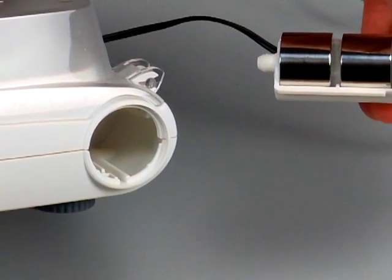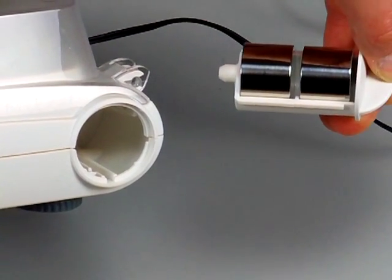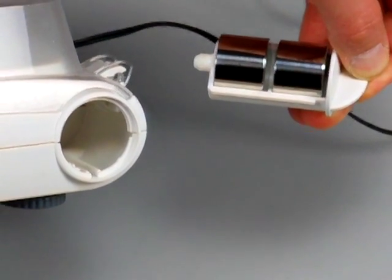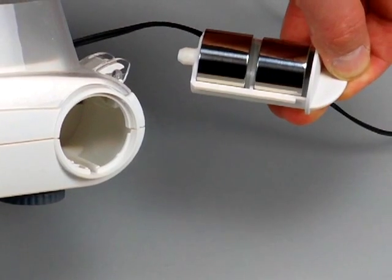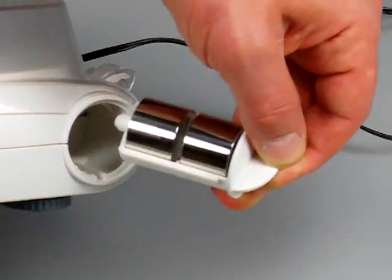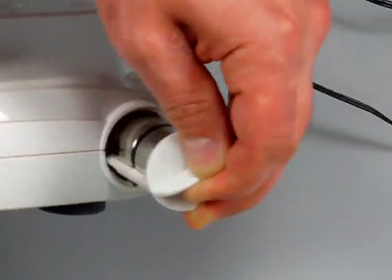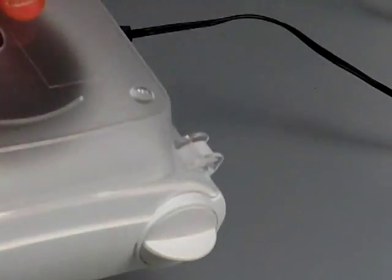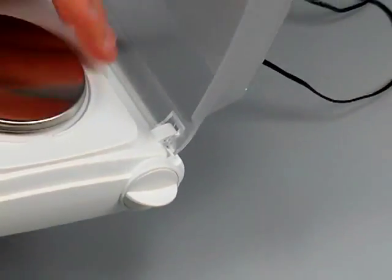For those models that do come with the calibration weights, I believe all the models up to 600 gram weighing capacity come with them. So if you buy a scale over 600 gram weighing capacity, the calibration weights are optional. But the cal weights go right into this little tiny compartment here and then it closes.